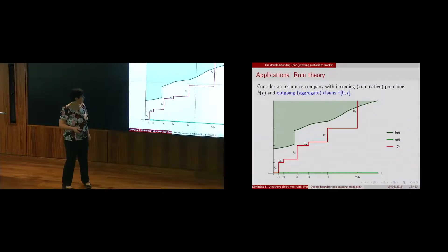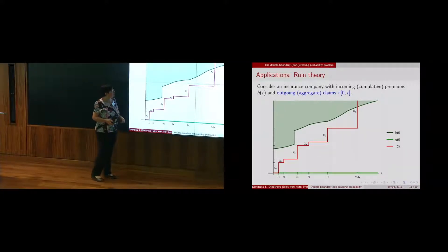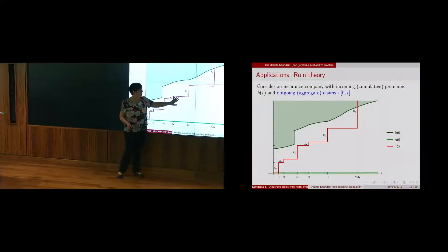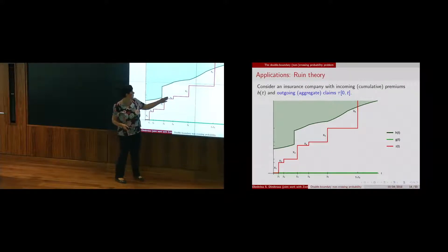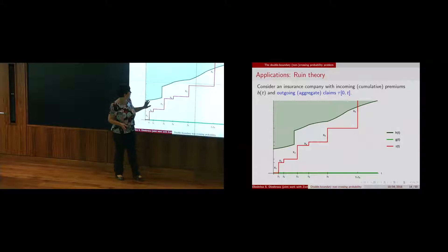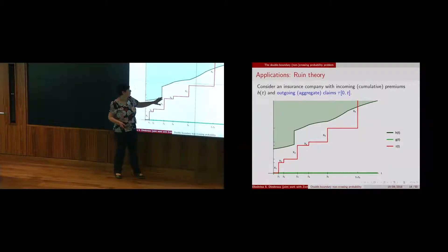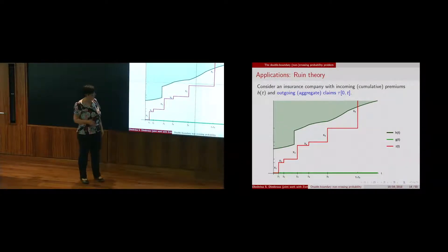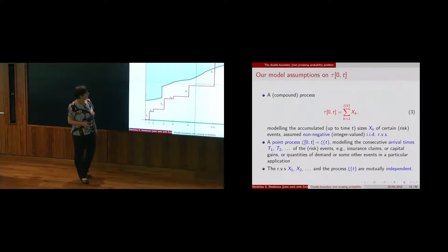Another application, a special case of the double boundary crossing problem, is the ruin probability application. The process tau represents the cumulative claim amounts up to time T, and the cumulative premium income function — which doesn't need to be a straight line but can be any function with possible lump sum discontinuities — serves as the upper boundary. The lower boundary is zero, and ruin is defined when the surplus process goes negative.